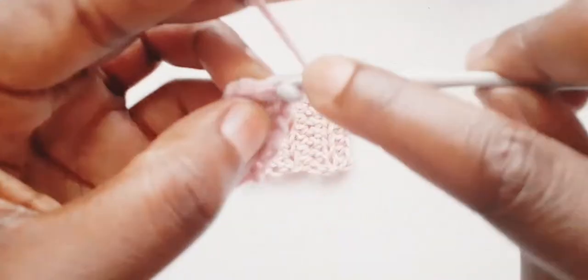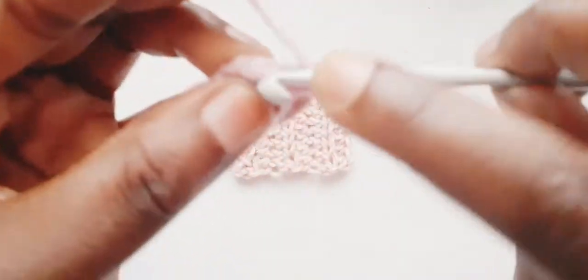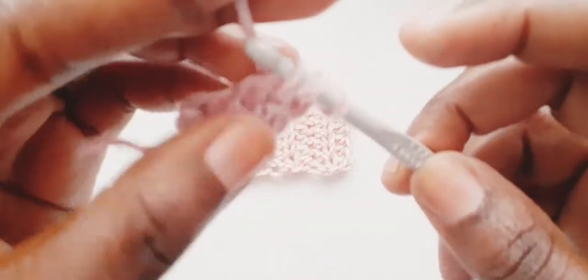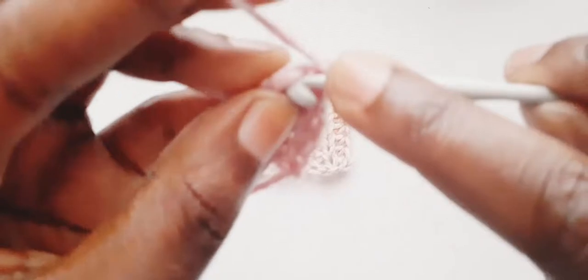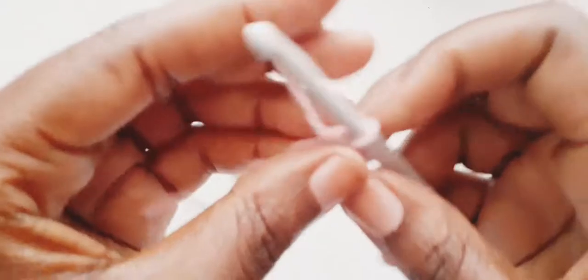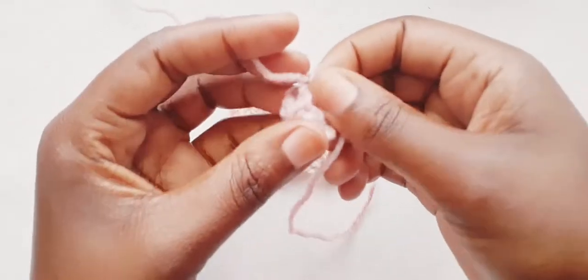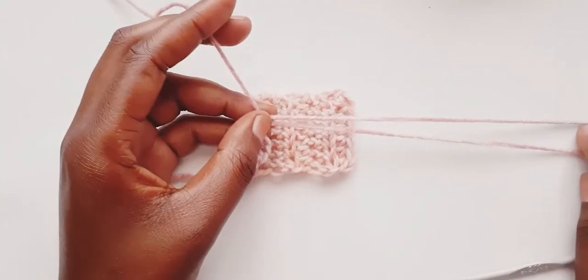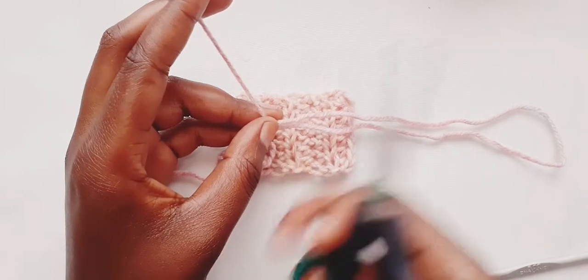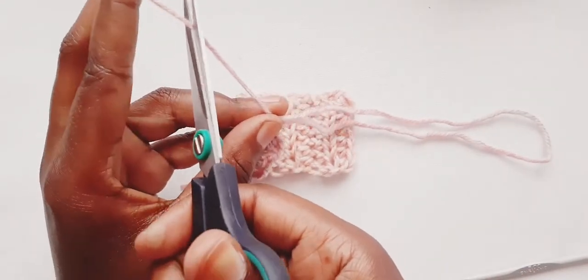One, two. Chain one and turn. Two half double crochets for row three. One, two. Chain one and turn. One, two half double crochets for row four, which is the last row. One, two. Okay, so at the end here we chain one. Then we leave a tail that is long because we are going to sew the two pieces together, and also we are going to use this same tail to join the bow to something.